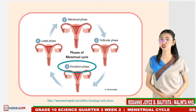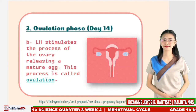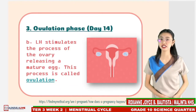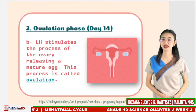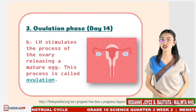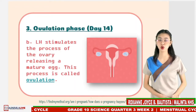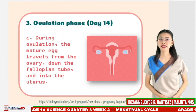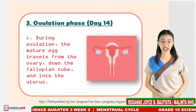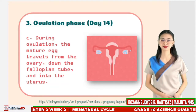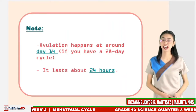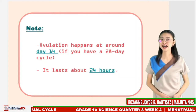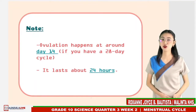Let us now move to the third phase, which is known as the ovulation phase. The ovulation phase starts when rising estrogen levels signal the pituitary gland to release luteinizing hormone. Luteinizing hormone will then stimulate the process of the ovary releasing a mature egg — this process is called ovulation. During ovulation, the mature egg travels from the ovary down the fallopian tube and into the uterus, and at any time during the egg's journey, sperm can fertilize it. Ovulation happens at around day 14 if you have a 28-day cycle, right in the middle of your menstrual cycle. It lasts about 24 hours, and after a day, the egg will die or dissolve if it isn't fertilized.